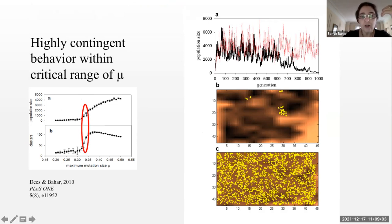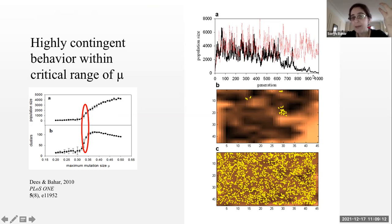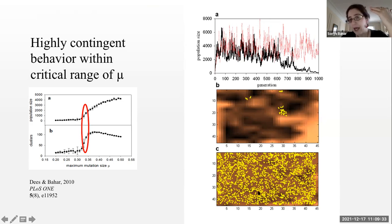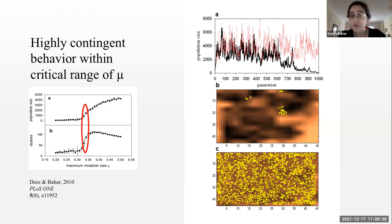For this critical range, basically what's happening is you can have a system that either goes extinct — like the time series shown by the black trace — or for identical parameters in a different run, they survive very, very well. Physicists may not be surprised by that, but from a biological or evolutionary biology point of view, this is very intriguing in terms of ideas like Stephen Jay Gould's idea of replaying the tape — for anyone who's read Wonderful Life about the Cambrian explosion.